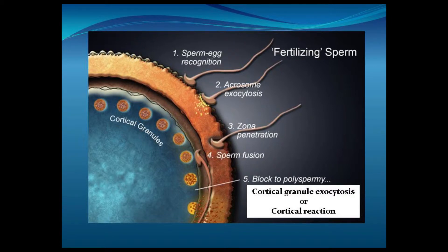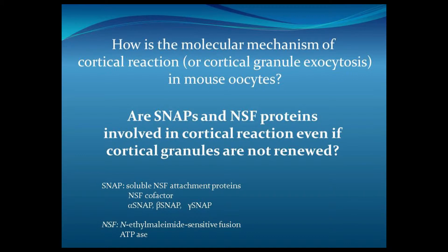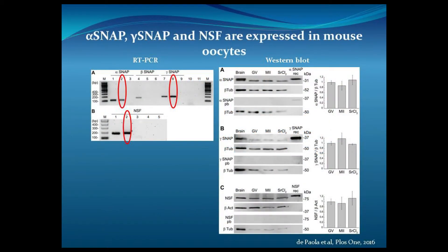If cortical granules are not renewed, the question is: are these proteins present in mouse oocytes? As a parenthesis, SNAP is an acronym for Soluble NSF Attachment Proteins — it's an NSF co-factor with three isoforms: alpha, beta, and gamma. NSF is an acronym for N-ethylmaleimide-Sensitive Fusion ATPase. The first thing we did was find if these proteins are present in mouse oocytes. RT-PCR results show that alpha-SNAP, gamma-SNAP, and NSF are all present in mouse oocytes.